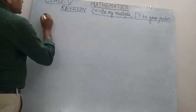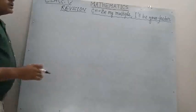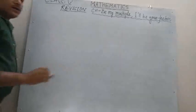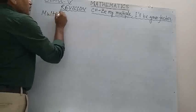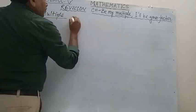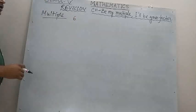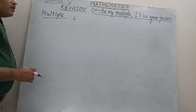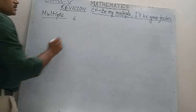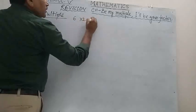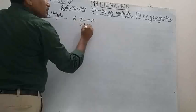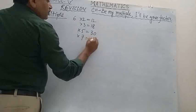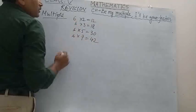Just some key points: the chapter 'Be My Multiple, I Will Be Your Factor' is completely related to two terms — multiple and factor. So what is a multiple? Suppose I have the number 6. You have already done the table of 6. By multiplying any number by 6, suppose I multiply by 2, I get 12. If I multiply by 3, I get 18. If I multiply by 5, I get 30. If I multiply by 7, I get 42.